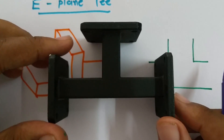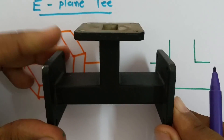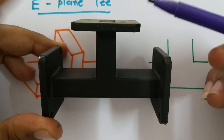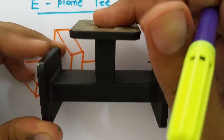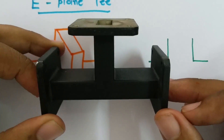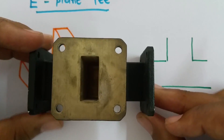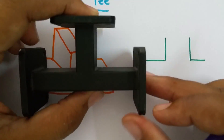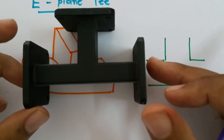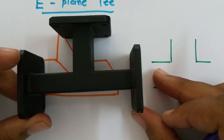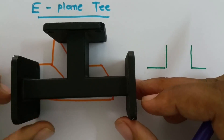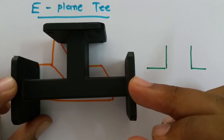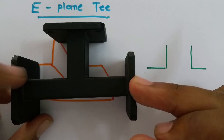In this video, I will be explaining E-plane T. Here you can see this is E-plane T, where this is the E-arm and these are two wings of the E-arm. In this E-plane T, if we give input from here, that input will get divided into these two output ports. The output at port 1 and port 2 will be out of phase. That is how this E-plane T functions.